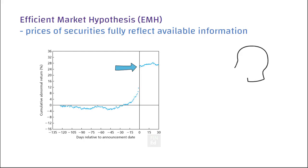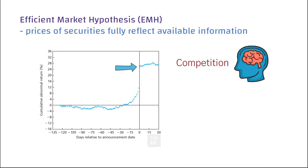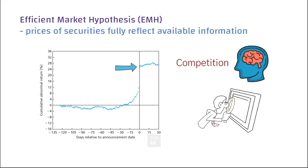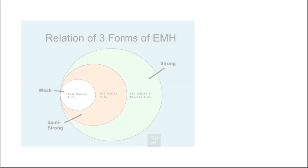A logical question is why we should expect stock prices to reflect all available information. It's the competition among investors who are information seekers. These investors will uncover the information that is largely overlooked by others for an abnormal profit. However, as they continue to exploit available opportunities, the market will eventually move to the equilibrium point where there won't be any information advantage left for laggers. Therefore, competition is a source of stock market efficiency.